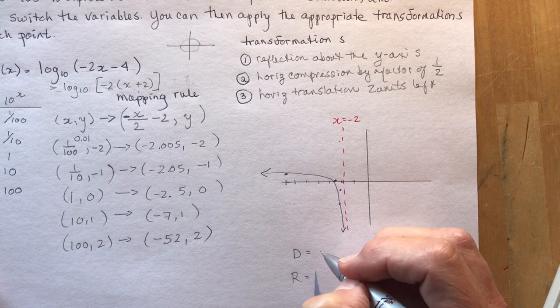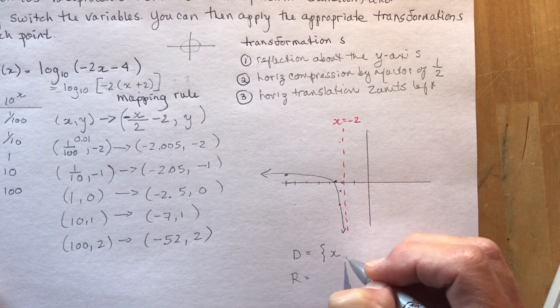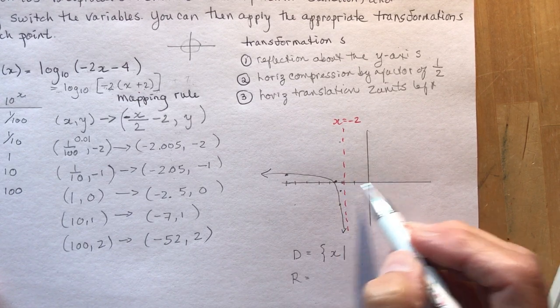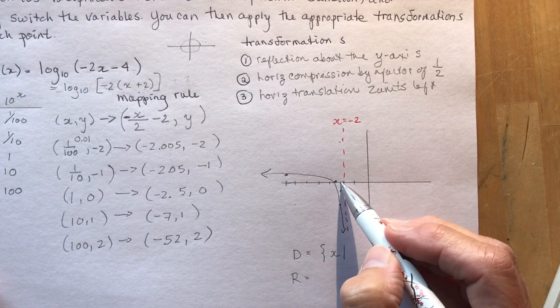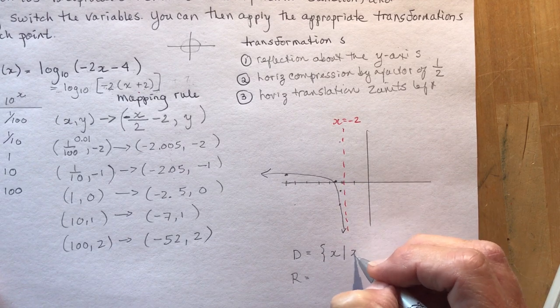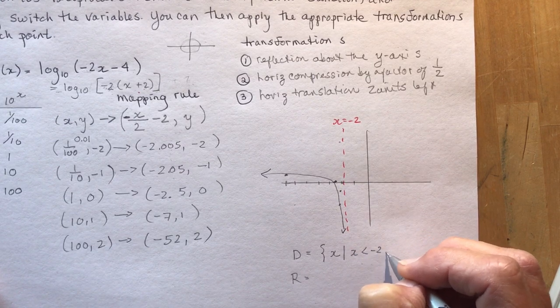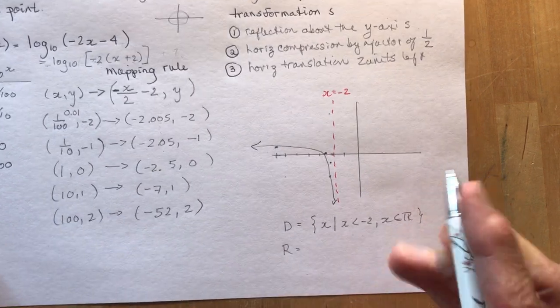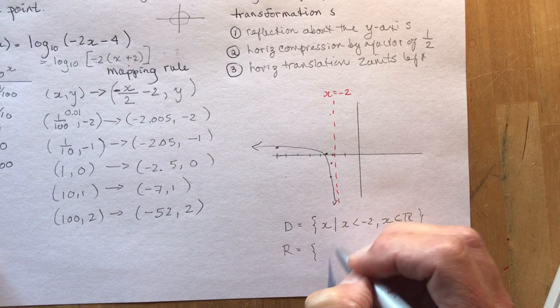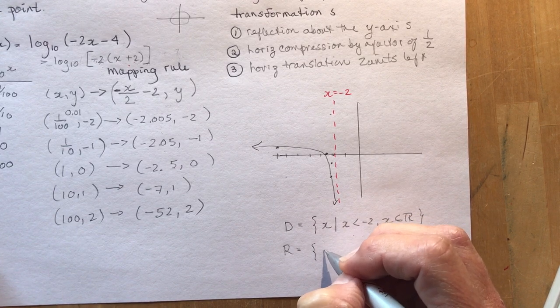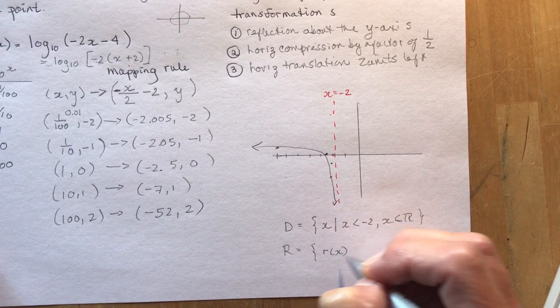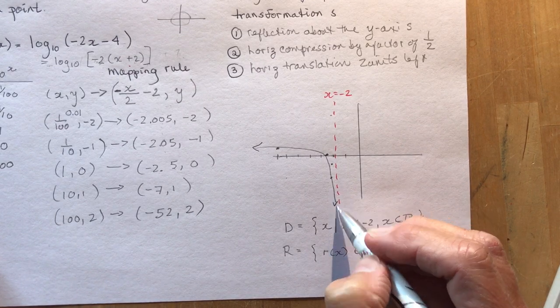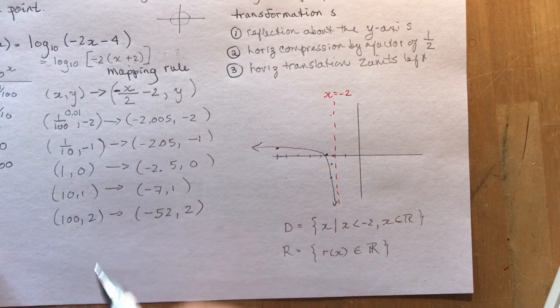So what's the domain and the range? What is the domain here? The domain is what values of X can I put in? I don't have any X values until I cross this asymptote. So that means X has to be less than minus 2, and X is an element of real numbers. And my range is R to X, an element of real numbers, because it's going down this way, and it's also going up this way forever and ever.